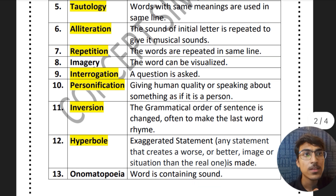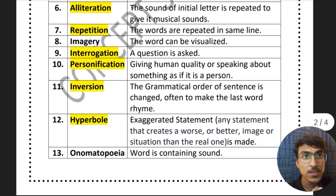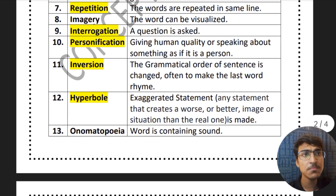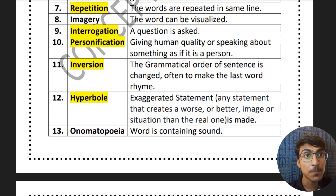Then imagery — the words can be visualized. Then interrogation — a question is asked. Then personification — gives human quality, or speaks about something as if it is like a person.